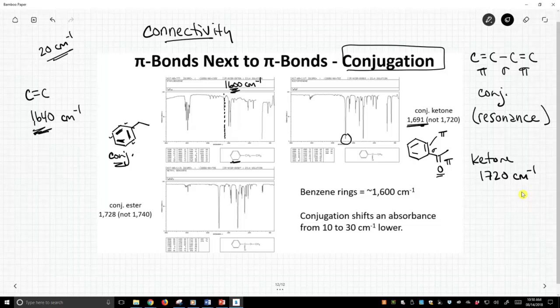So it moved a little more than what we said is a typical value, 20 wavenumbers, but it drifted. It moved. 1720 in 1691, that is an important interpretable difference. It has lowered, and it's because of conjugation, which is sort of the theme of this video.